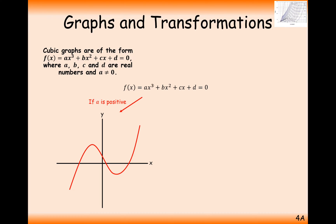However, when we substitute minus 10 into the x-cubed function, that gives us minus 1000. And if you think about it, minus 1000 versus positive 100 — the minus 1000 is always going to win. That's why it's always going to start in the bottom left-hand quadrant and finish in the top right-hand quadrant for a cubic graph.